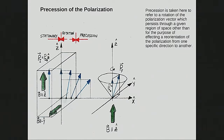If we make the box with the orthogonal magnetic field bigger, the polarization rotates further — eventually to the x-axis, then pointing down, and so on. By choosing the field strength and the velocity of the neutron through the region, we can rotate the polarization anywhere we want. This is useful for doing experiments.